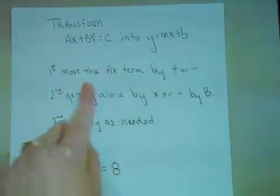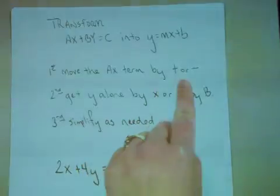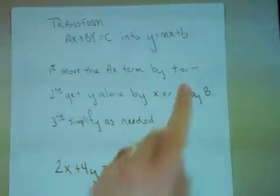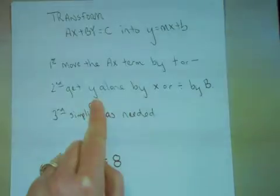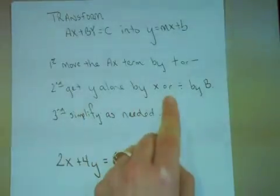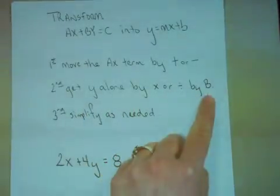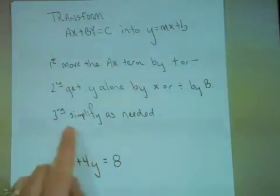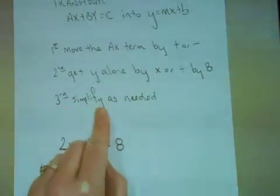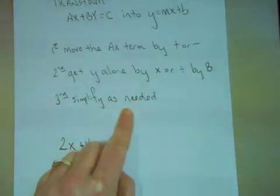First, we need to move the ax term by either adding or subtracting it from both sides. Second, we need to get the y alone, and we do this by multiplying or dividing by the b coefficient. Lastly, we're going to simplify anything that we need to in terms of fractions.